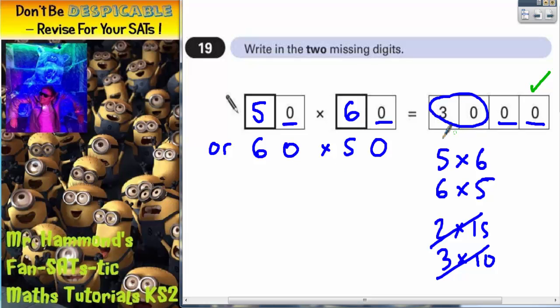6 times 5 is 30. Then we've got the two zeros again which are here. So whichever way you do it, that's the answer.